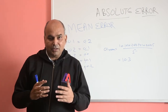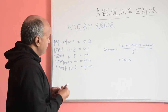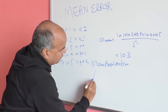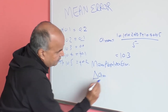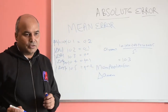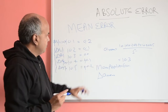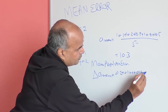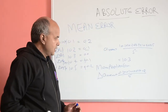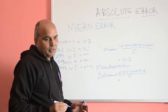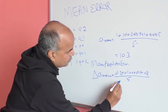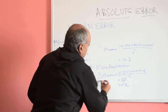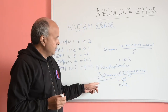When we talk about the absolute error of the overall measurement, we call it the mean absolute error, denoted Δa_mean. It equals the sum of all absolute errors divided by n. So Δa_mean = (0.2 + 0.1 + 0.0 + 0.1 + 0.2) / 5 = 0.6 / 5 = 0.12.